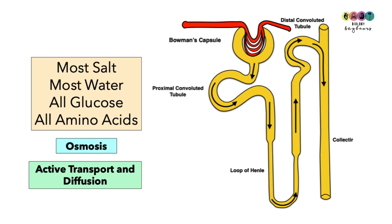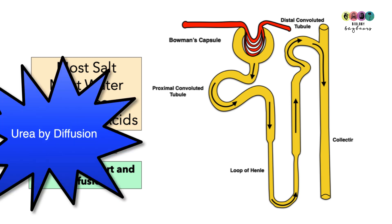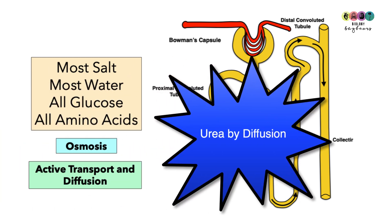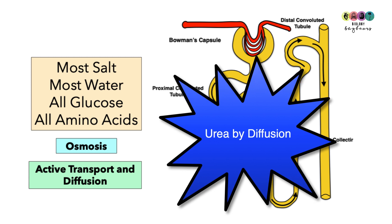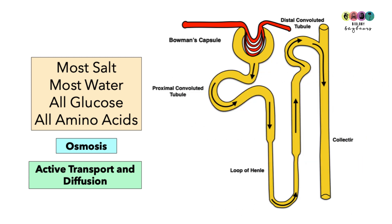At the proximal convoluted tubule: most salt, most water, all glucose, all amino acids, and some urea are reabsorbed. Water is reabsorbed by osmosis, amino acids and glucose by active transport, and some substances such as urea by diffusion.